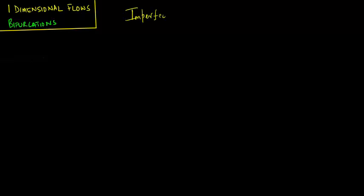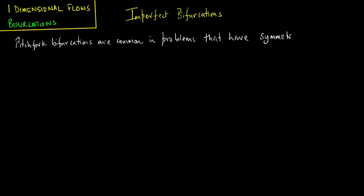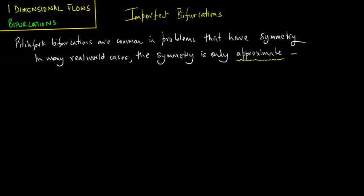In this lecture we deal with imperfect bifurcations. Pitchfork bifurcations are fairly common in problems that have symmetry. In many real-world cases, the symmetry is only approximate and imperfection can actually lead to a slight difference between the left and the right.